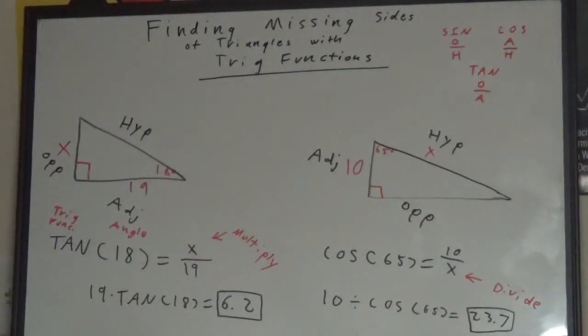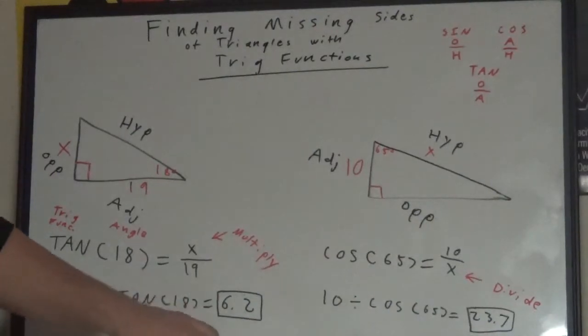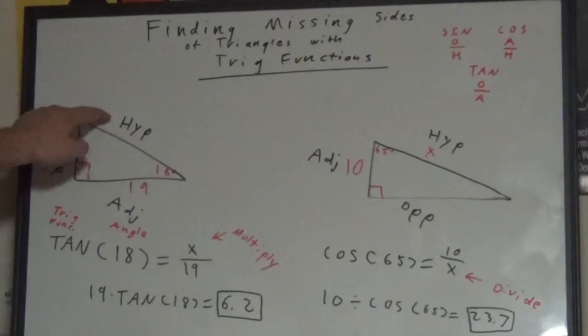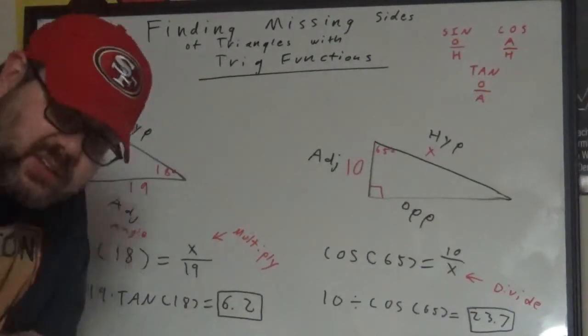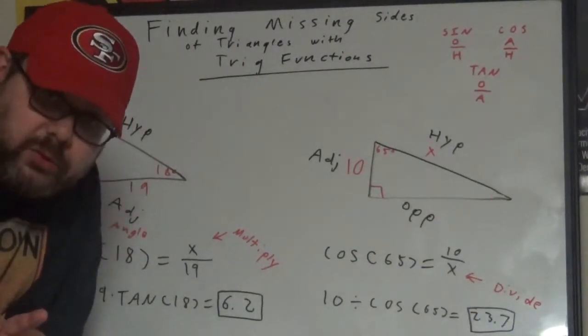And well, that is it. One more time. First step, label your three sides. I greatly suggest that you go hypotenuse, adjacent, opposite. That is the easiest order to go with.